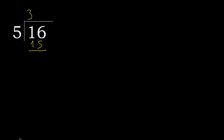16 minus 15 is 1. Next — that is not a whole number, therefore complete with 0. Here with a point: 0 point.